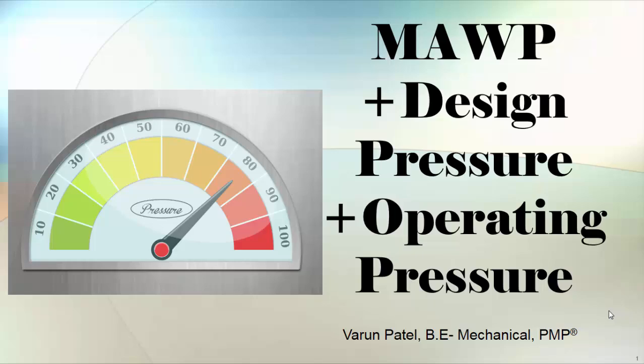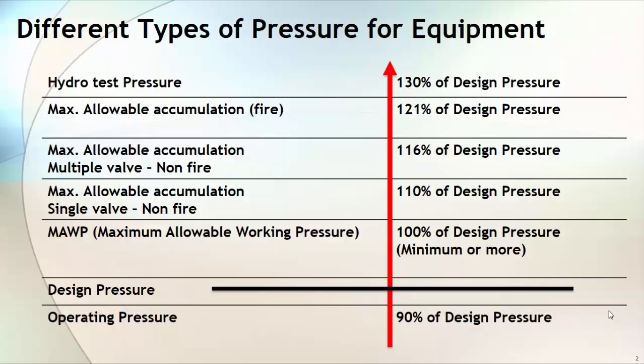Let's start with operating pressure. Let's assume that you have designed one process plant and that plant is going to operate with certain pressure and temperature. Based on your process condition you will select the safe operating pressure for your equipment, and that will become your operating pressure.